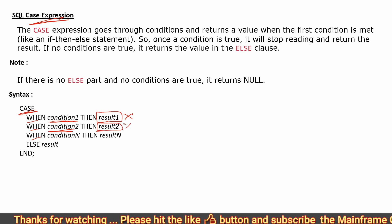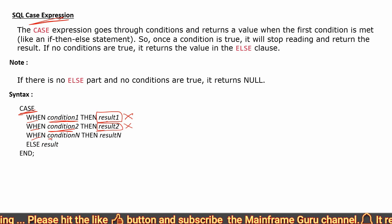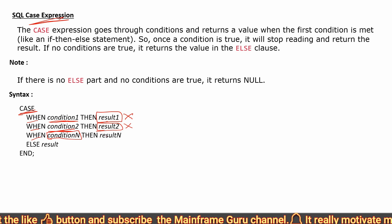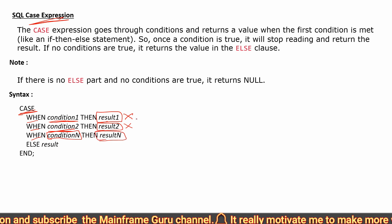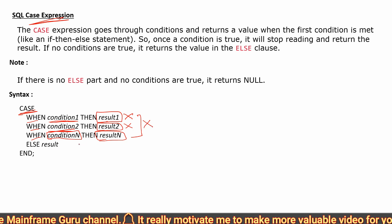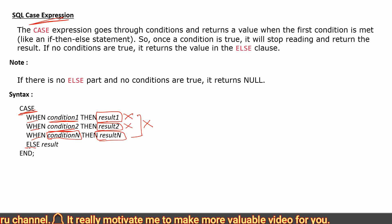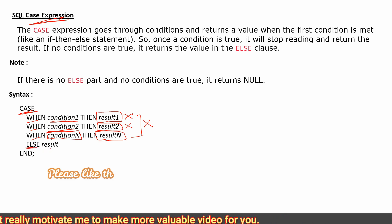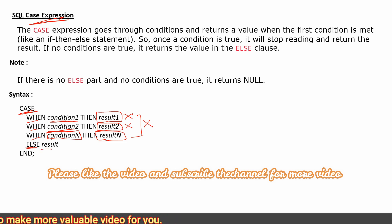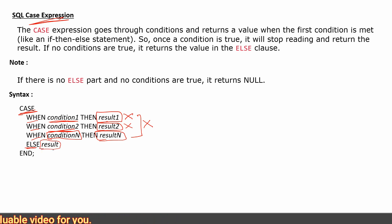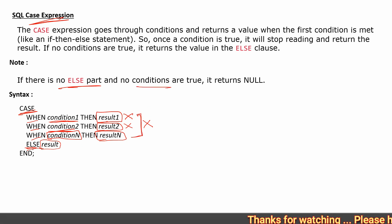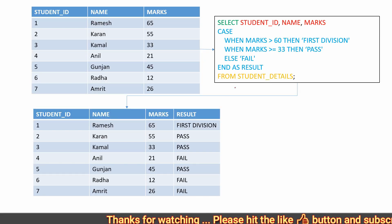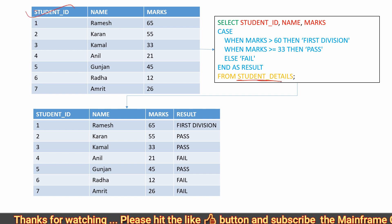If the second condition is also not true, it will check condition N. If condition N is true, it returns result N. If none of the conditions are true, it checks whether we have given an ELSE part. If ELSE is given, it returns the ELSE result value. If ELSE is not given and no condition is true, it will return a NULL value.